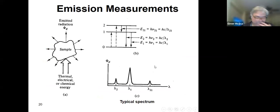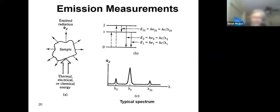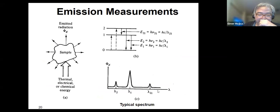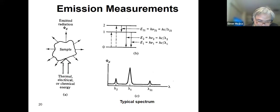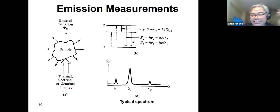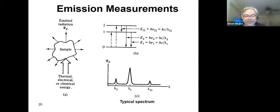If we have emission, looking at what's happening here: you have an energy that is added to your sample — it could be thermal, electrical, or chemical energy. It causes non-radiative excitation of the analyte and emission of radiation in all directions. Since it's in all directions, we call this isotropic emission.